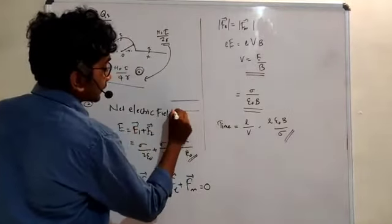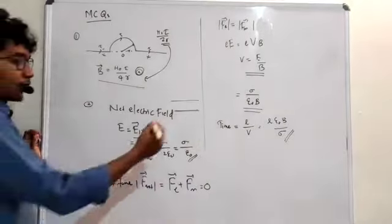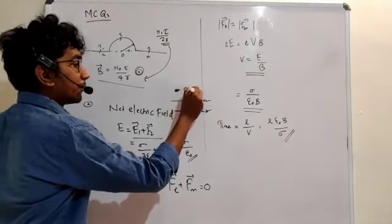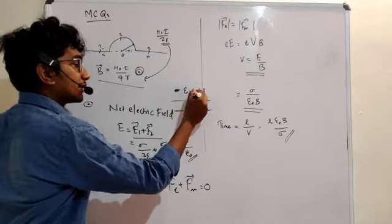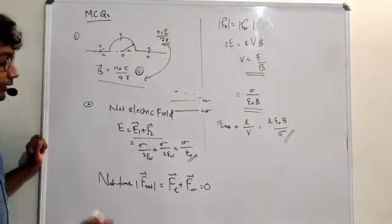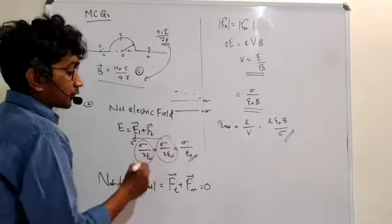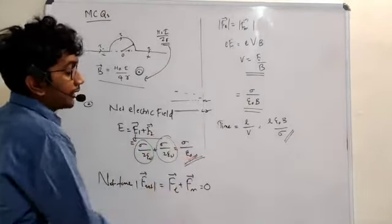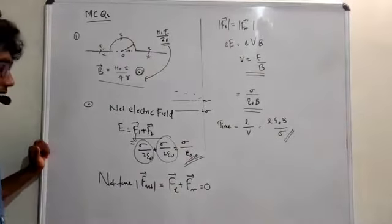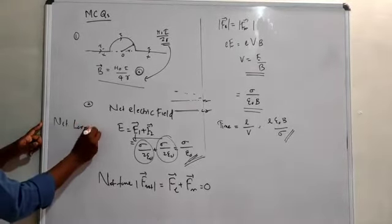First, we find the net electric field inside the parallel plate capacitor. The net electric field is E₁ plus E₂, since both plate contributions add in the same direction between the plates. Each plate contributes sigma divided by 2ε₀, so the total net electric field is sigma divided by ε₀.